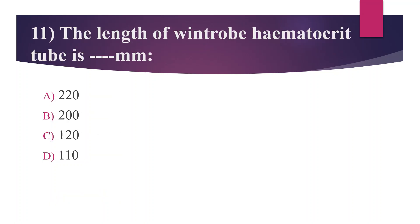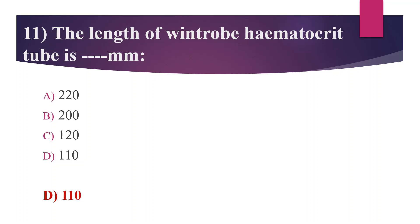Eleventh question: The length of the Wintrobe hematocrit tube is how many millimeters — Option A: 220 mm, Option B: 200 mm, Option C: 120 mm, Option D: 110 mm. Answer is Option D, 110 mm. Wintrobe tube is a narrow glass tube measuring 110 mm long with a graduation from 0 to 100 mm in both ascending and descending order.